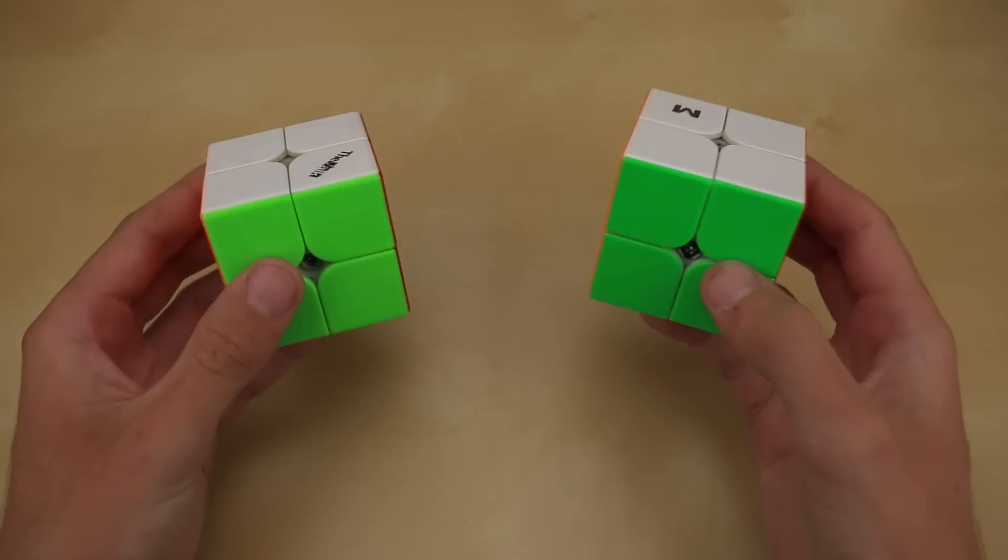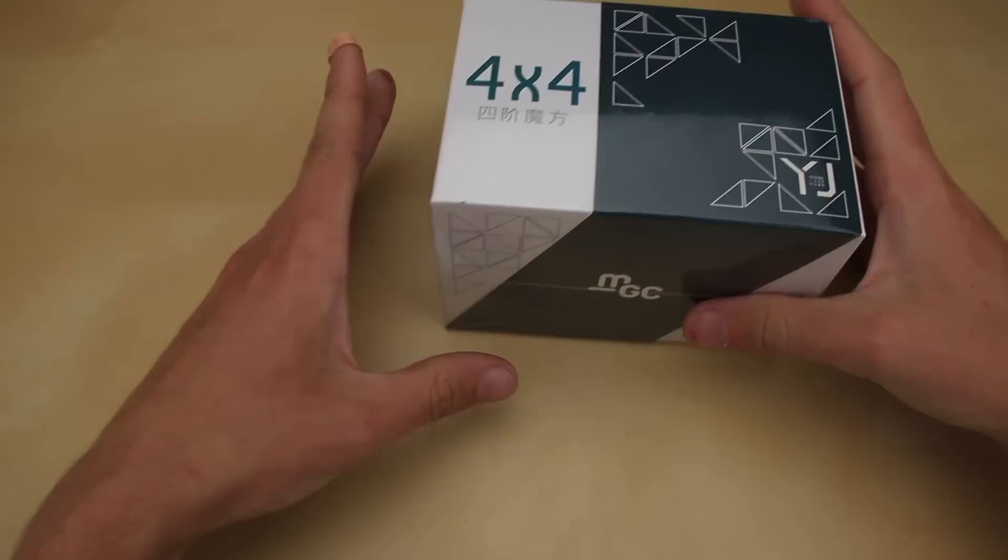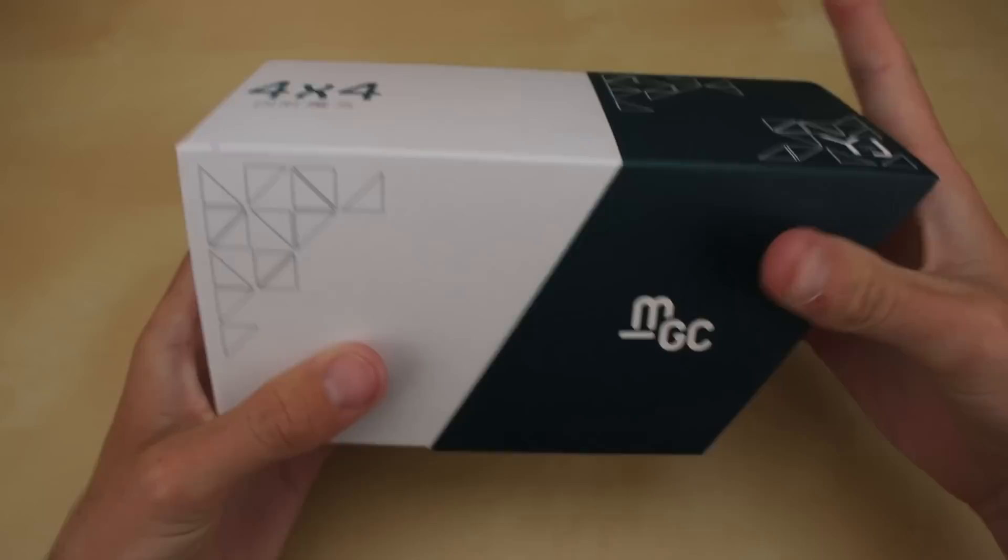It's kind of hard to recommend one over the other. They're the same price with pretty comparable performance, but you know, for $20 you can't really go wrong with either of them. Again, link in the video description for both of these at thecubicle.com. Anyway, let's move on to the final puzzle of this video, the MGC 4x4.